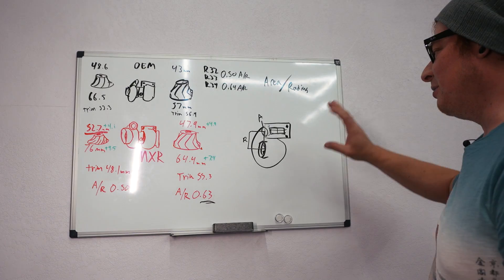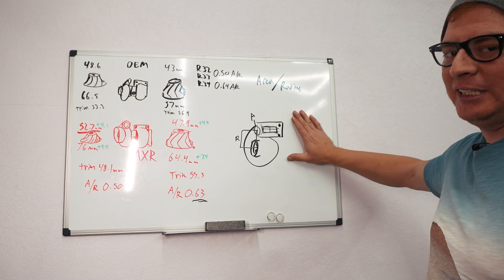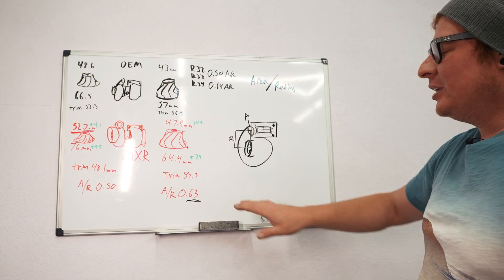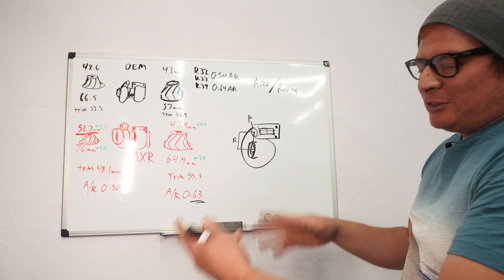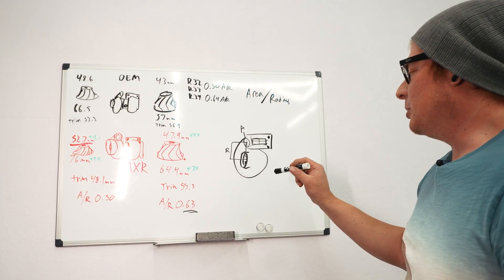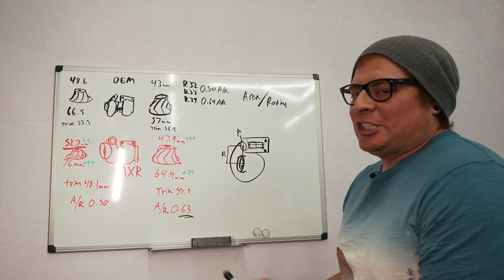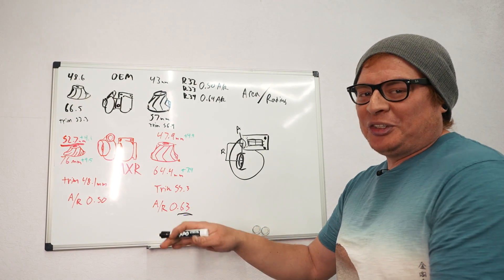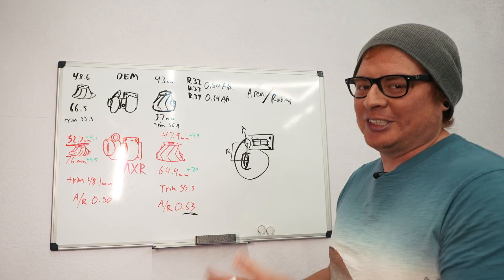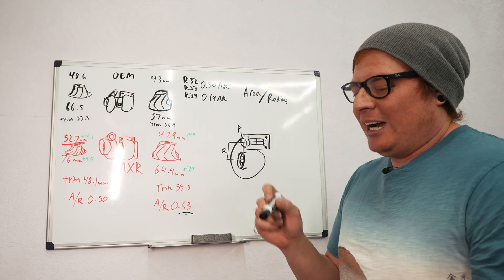Basically what this number is telling you is the flow capacity of the turbine housing. So the bigger the number the more volume of air that it can flow, the smaller the number the less volume it can flow. You can use any kind of turbo on your engine - you could put a 0.43 housing on your engine or you could put a 1.5 housing on your engine. That's just going to dictate how long it takes you to hit boost and how big of a restriction you're going to have in the power band.